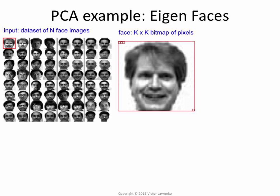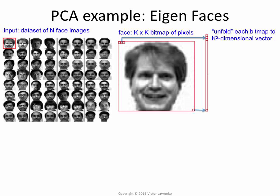We assume this is the first pixel, second pixel, and this is the last pixel. To do anything with the bitmap, we have to form a single vector out of it, because all instances must be represented by vectors or attributes. We unfold the bitmap into one big vector: the first row of pixels becomes the first k attributes, the second row becomes the next k, and the last row becomes the last k attributes. So you end up with a vector that has k-squared dimensions.